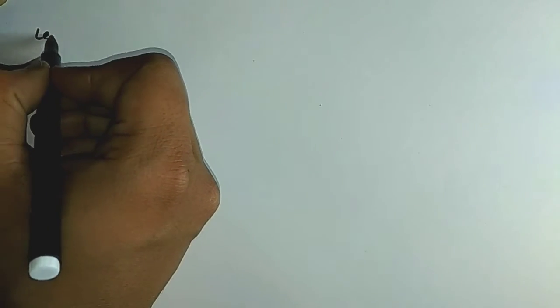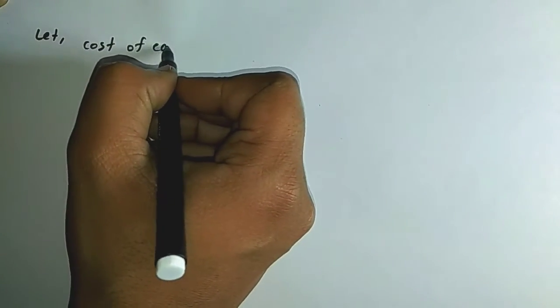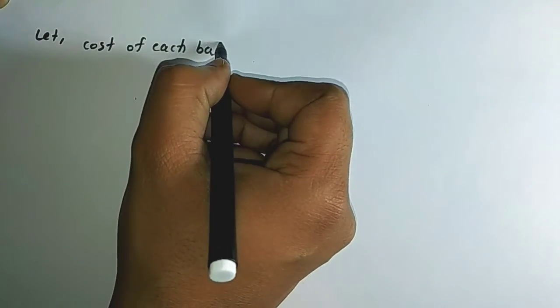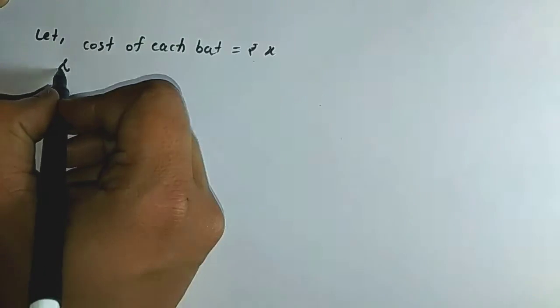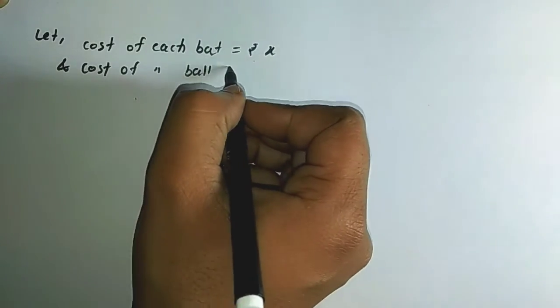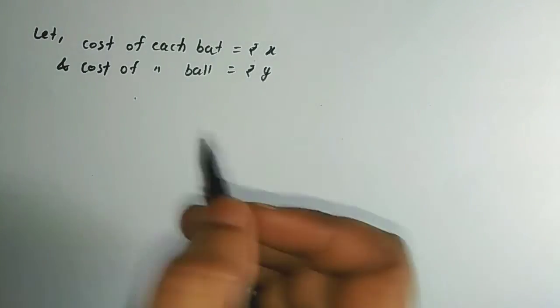You can use any variable — A, B, Alpha, Beta, L, M, S, T. I will assume the cost of each bat is equal to Rs.x, and the cost of each ball is equal to Rs.y.